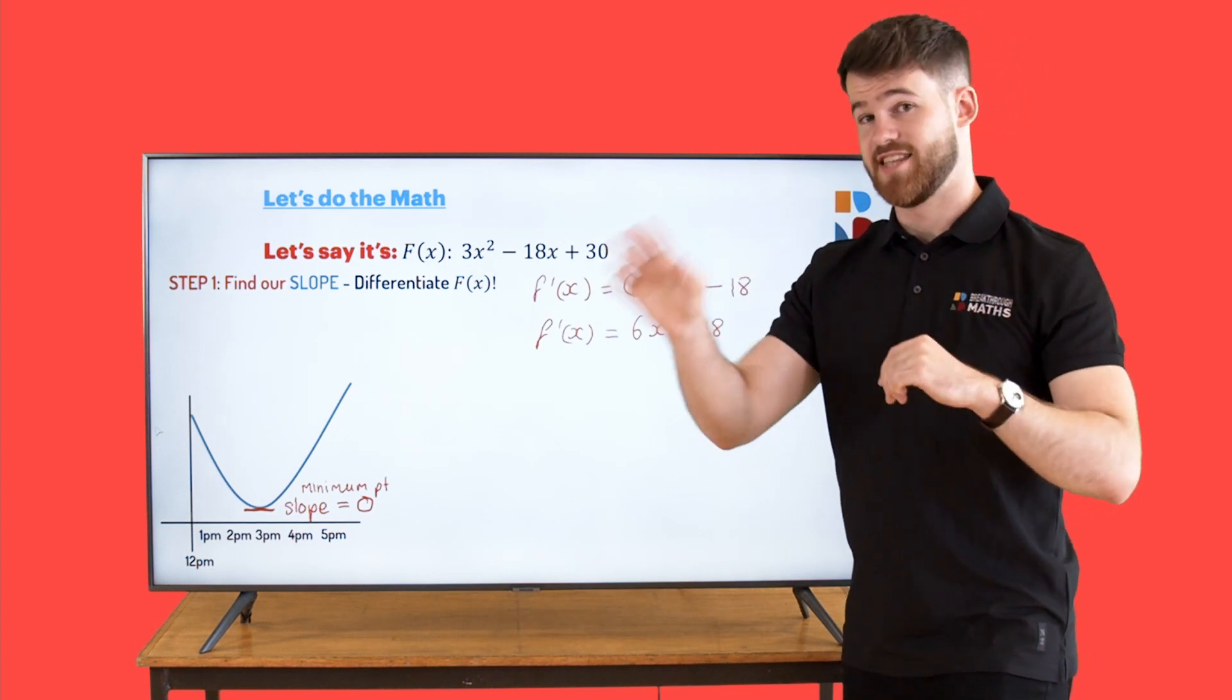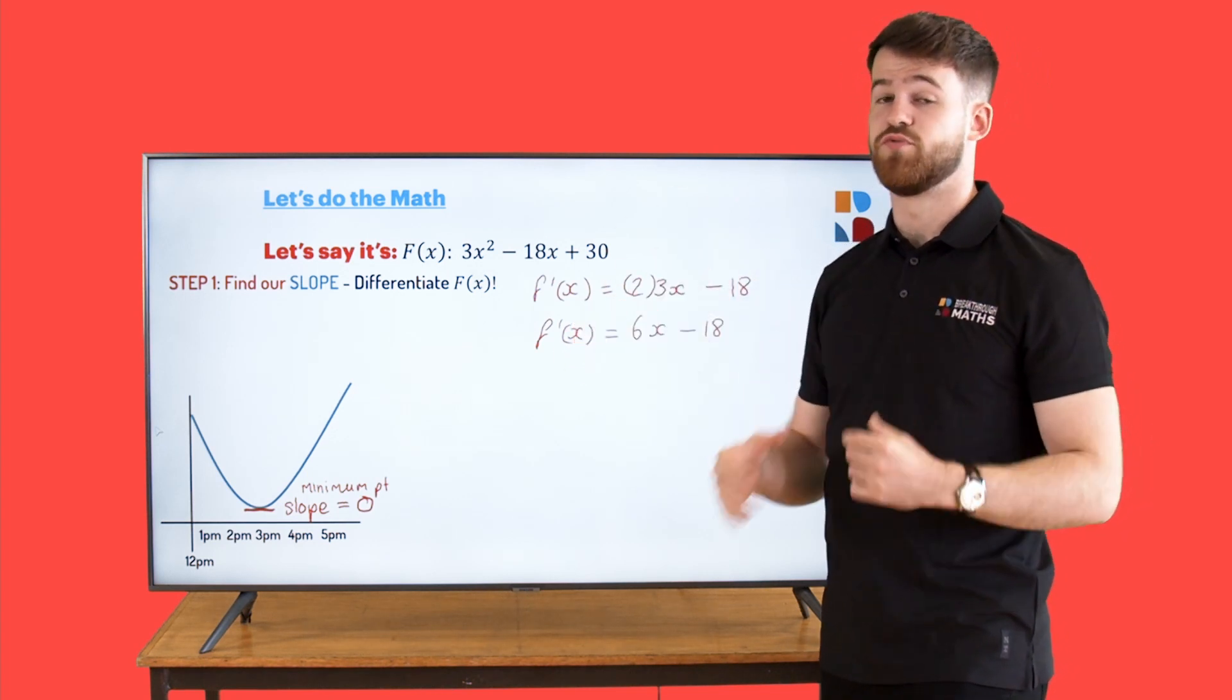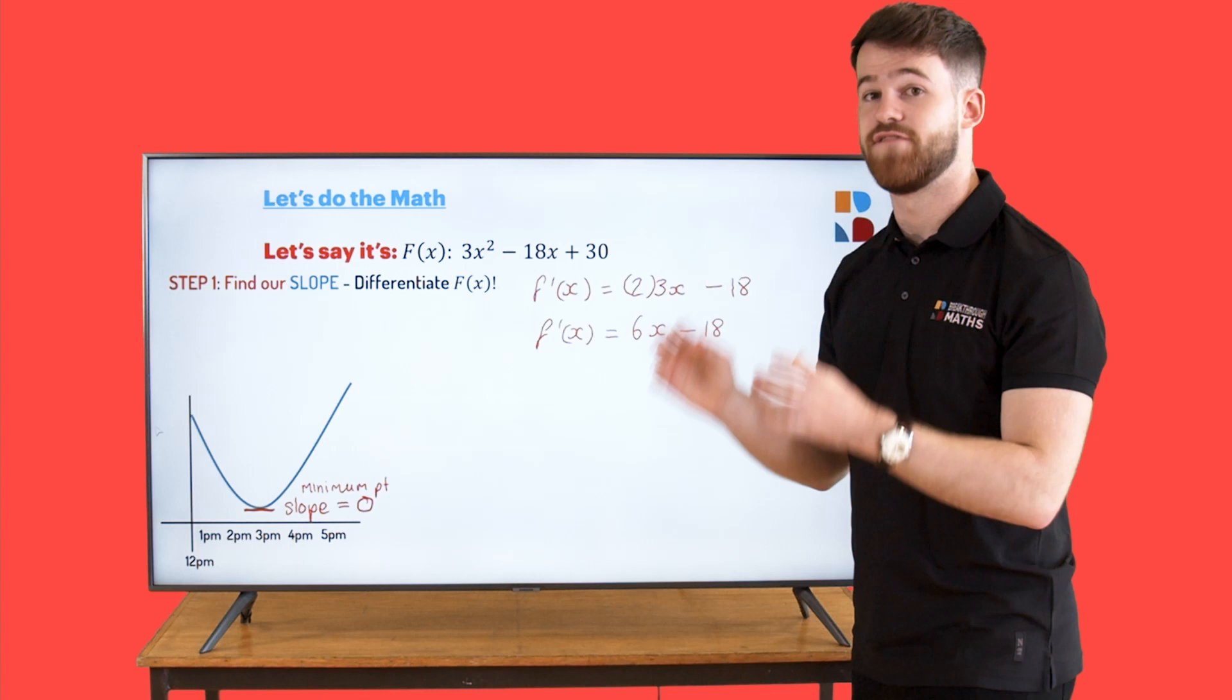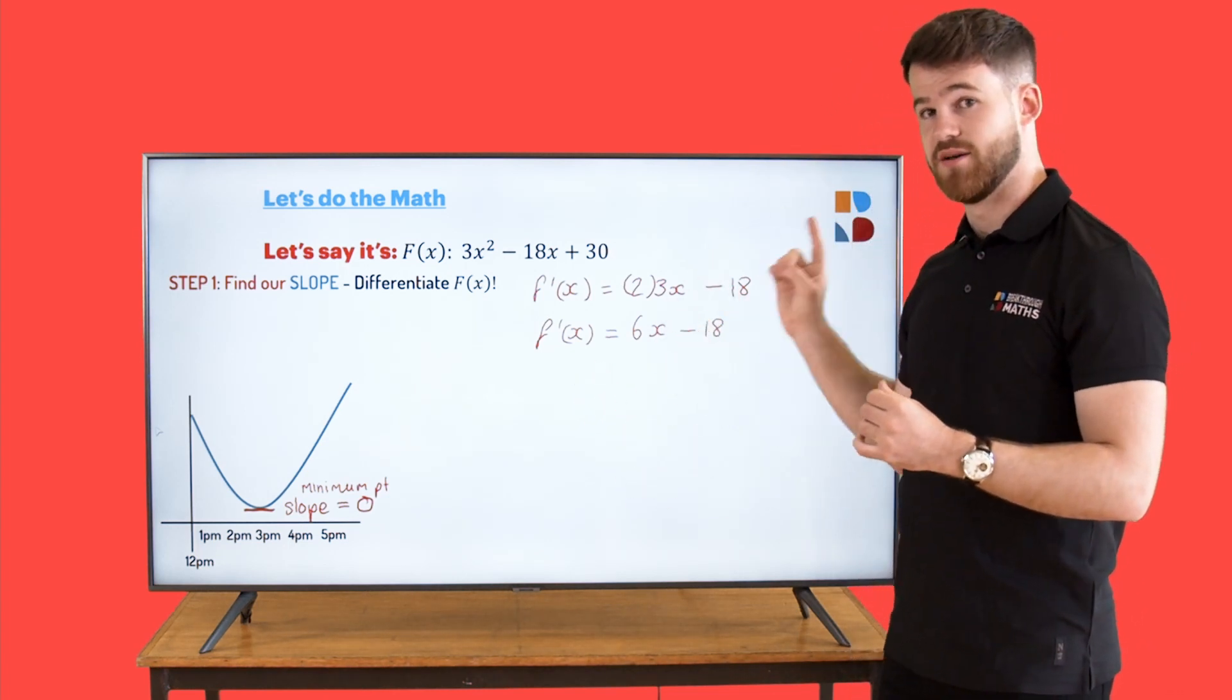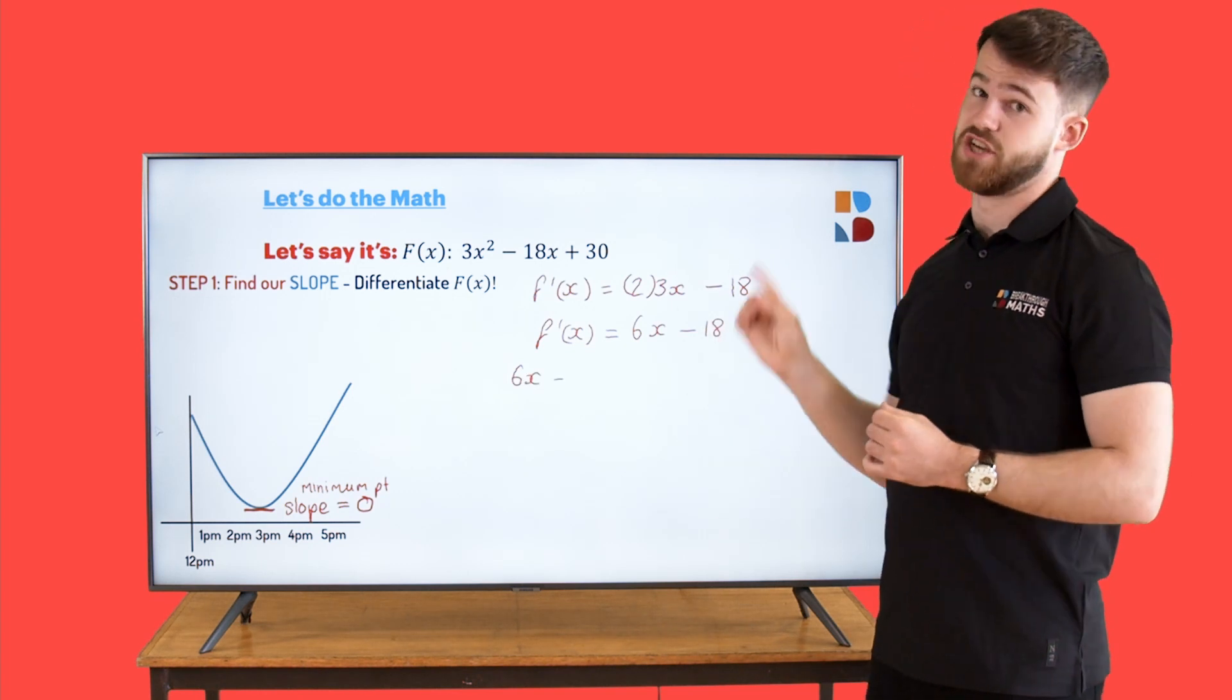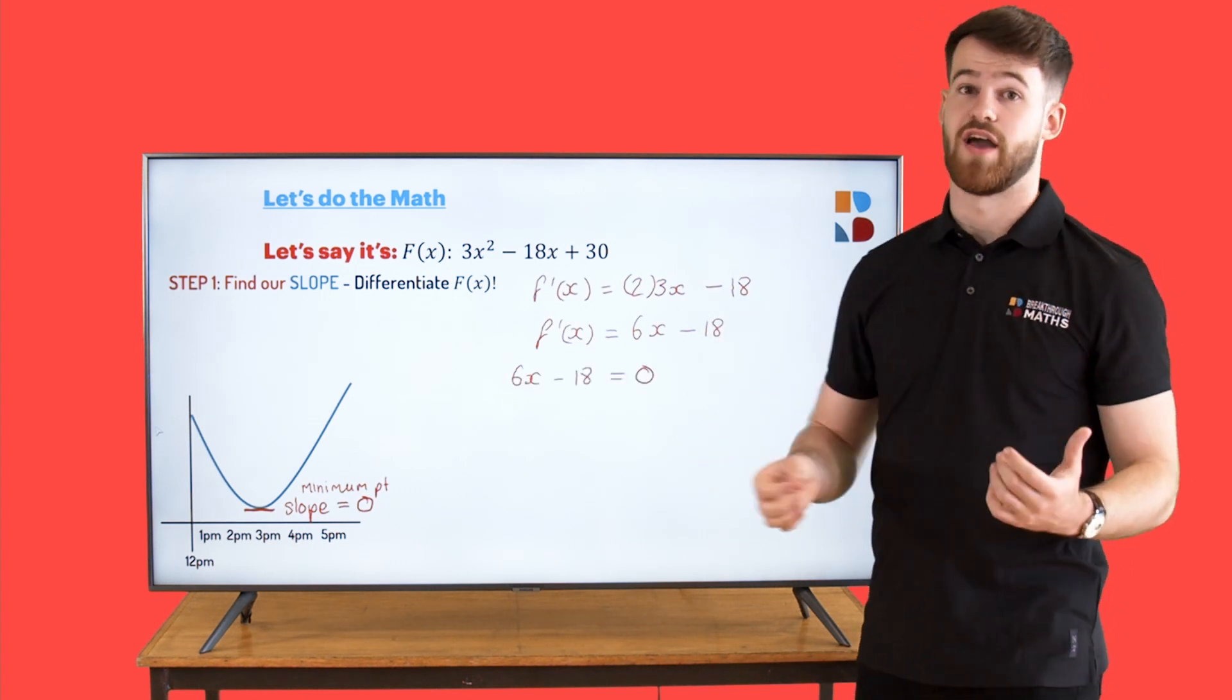Now, as I said, that's the equation for the slope. So if we put that equal to zero, we can find the minimum point. So let's do that here. 6x - 18 = 0. Now let's solve for x.